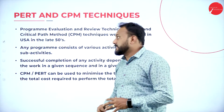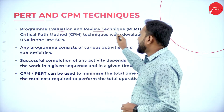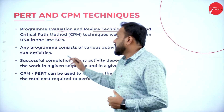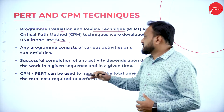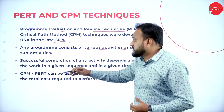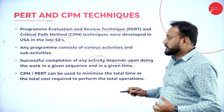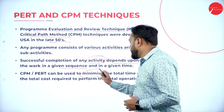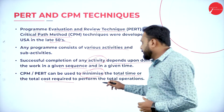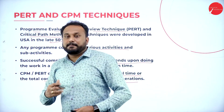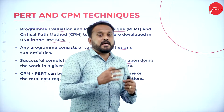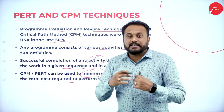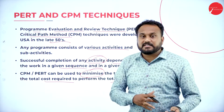Then we have PERT and CPM. PERT stands for Program Evaluation and Review Technique, and CPM means Critical Path Method. These techniques were developed in the USA in the late 1950s — specifically 1956 to 1959. Any program consists of various activities and sub-activities, and successful completion depends on doing the work in a given sequence and in the given time. CPM and PERT can be used to minimize the total time or total cost required to perform the total operation. I will take a separate session on PERT and CPM to manage time and cost.